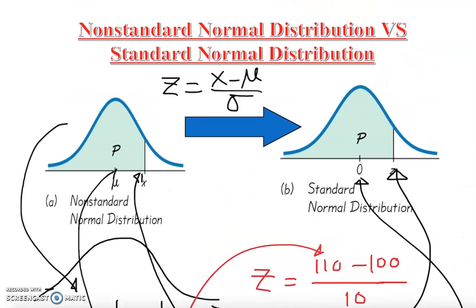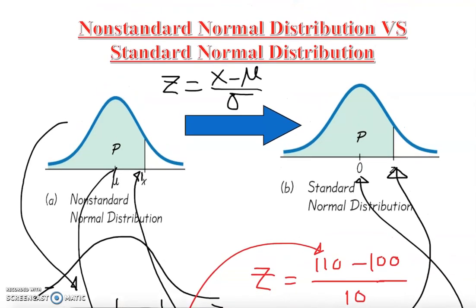For non-standard distribution, your mean is not equal to zero. For standard normal distribution, the mean must be equal to zero and the standard deviation must be equal to one — those are the characteristics required. For non-standard, your mean cannot be zero and your standard deviation may or may not be one.